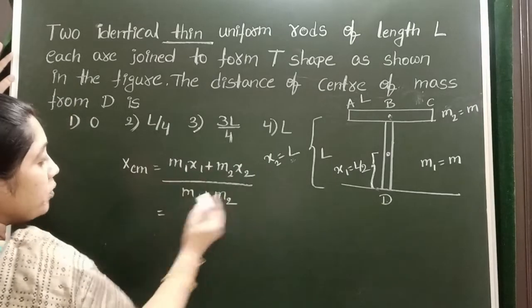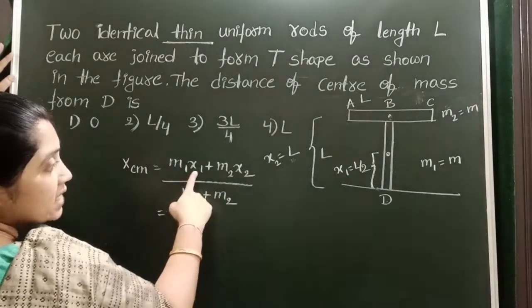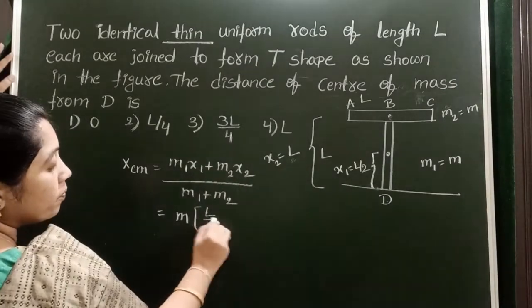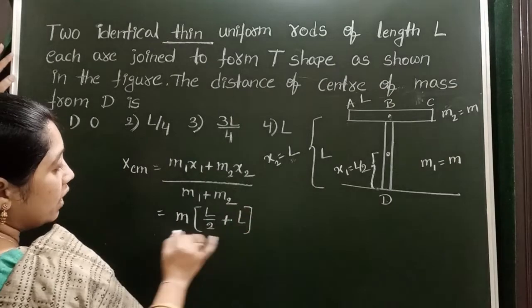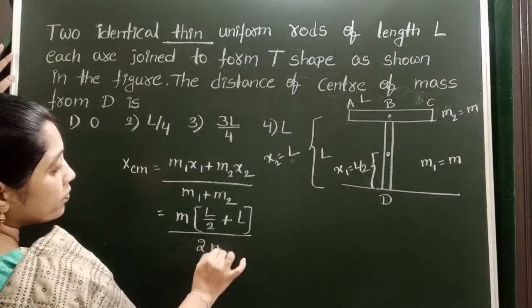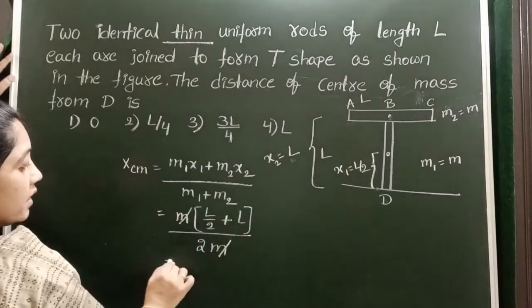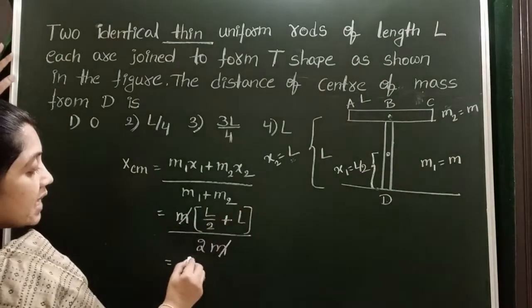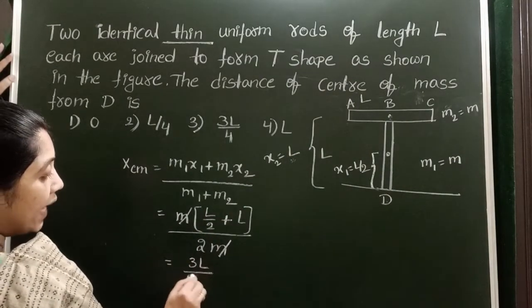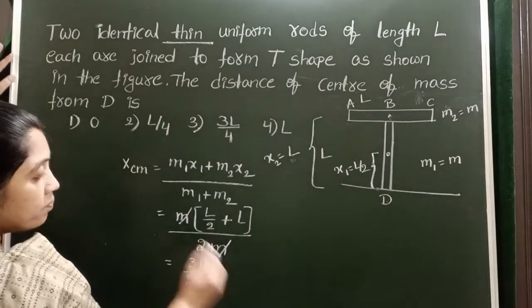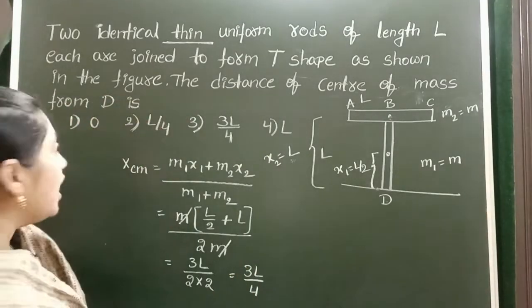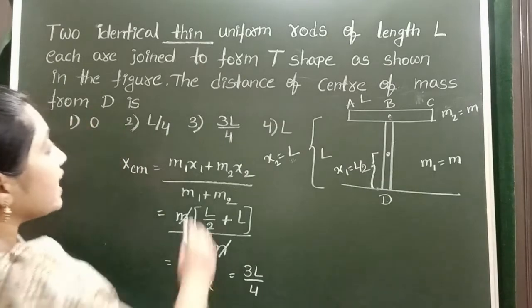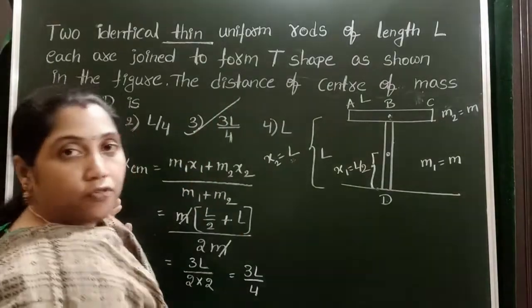M1 and M2 are the same, so take M common. X1 equals L by 2 plus X2 equals L, all divided by 2M. The mass gets cancelled. L by 2 plus L equals 3L by 2, divided by 2, equals 3L by 4. The distance of center of mass from point D is 3L by 4.